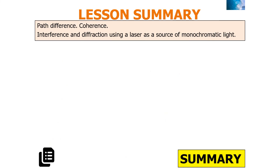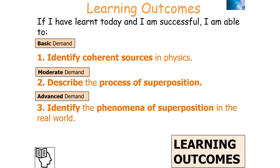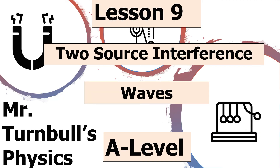To summarise today's lesson: we understand what path difference is, what coherence is, and how interference and diffraction using a laser as a source of monochromatic light works. We should be able to identify coherent sources, describe the process of superposition, and identify superposition phenomena in the real world. Thank you very much for watching this lesson on two-source interference, part of the WAVES topic in AQA A-level physics. Have a lovely day.